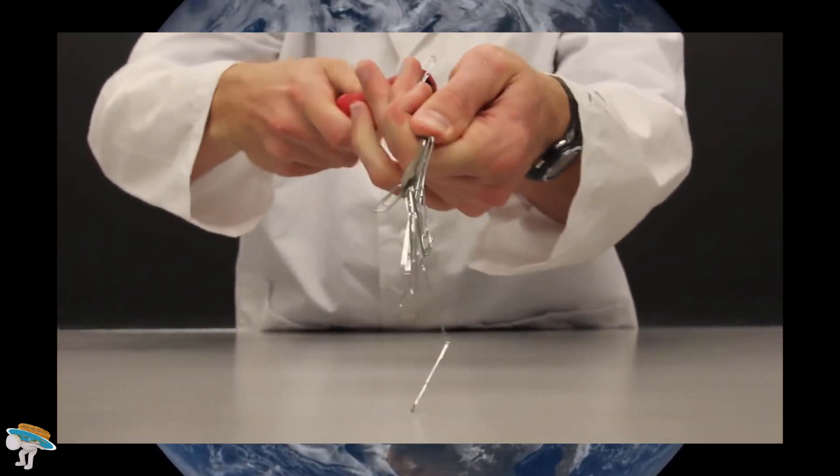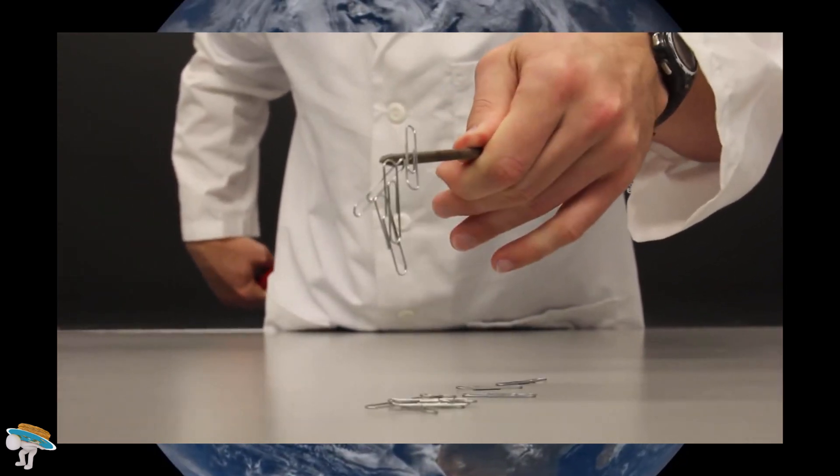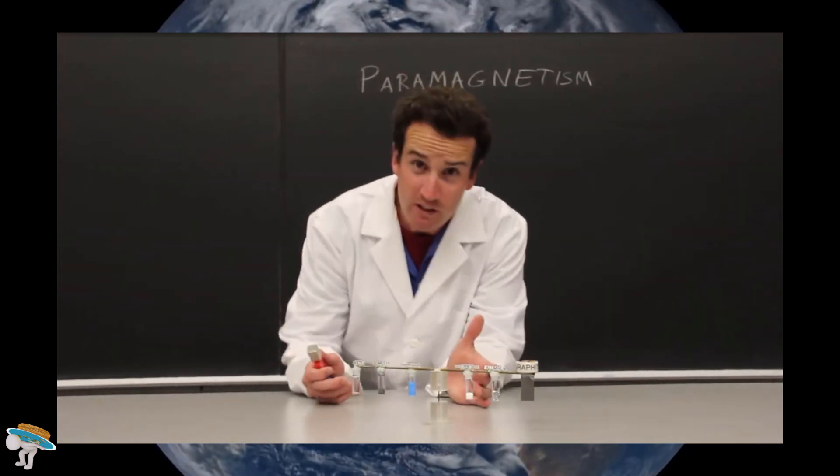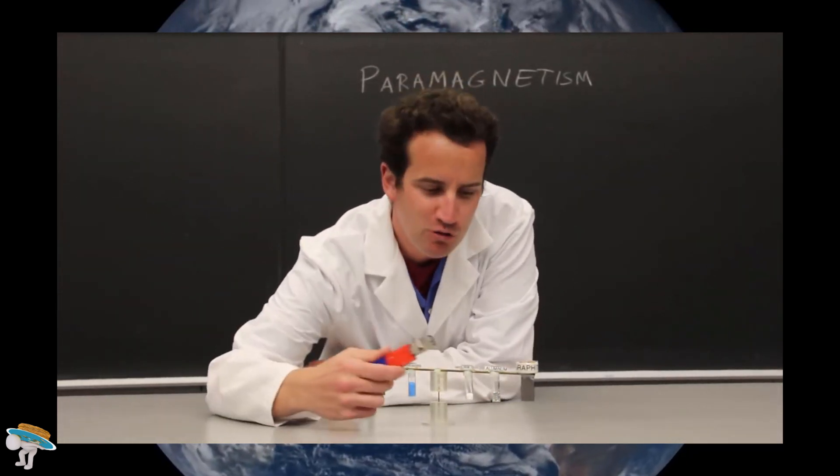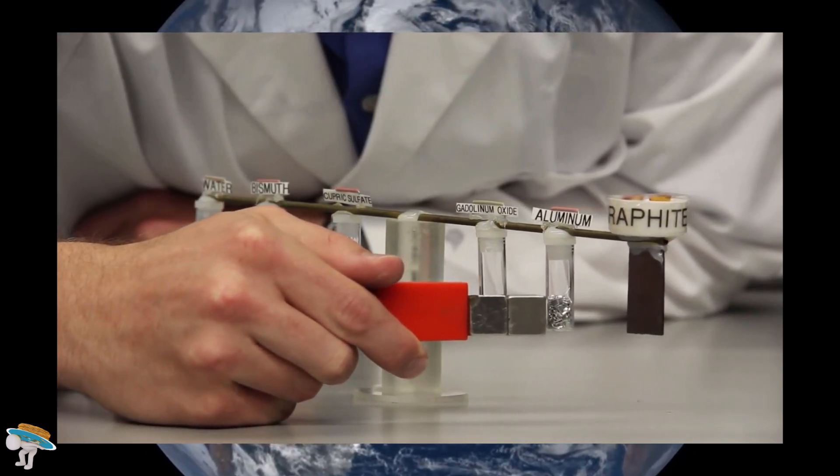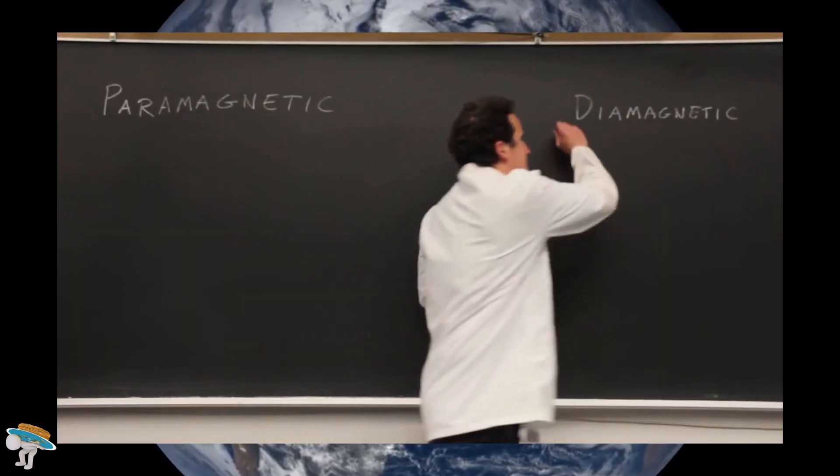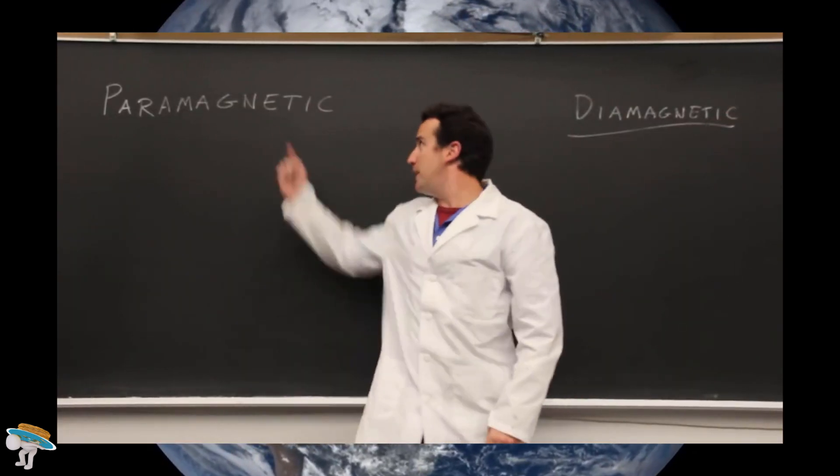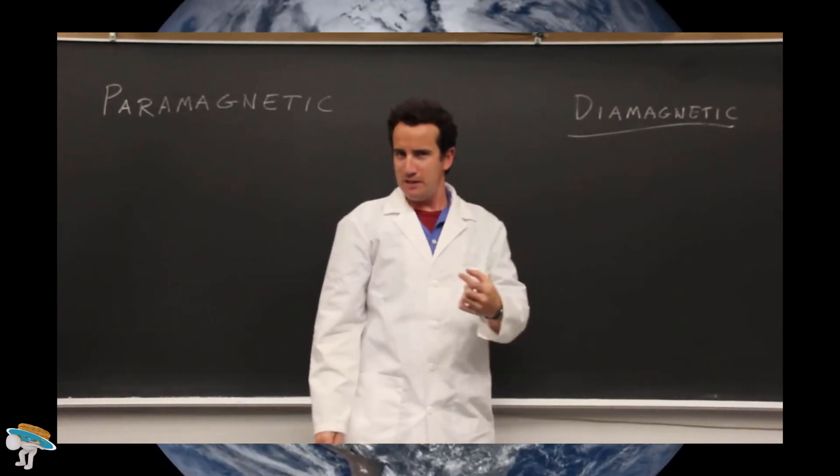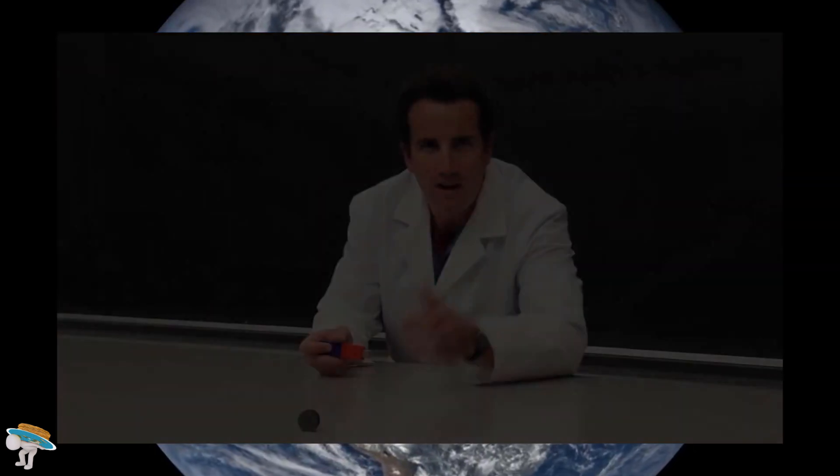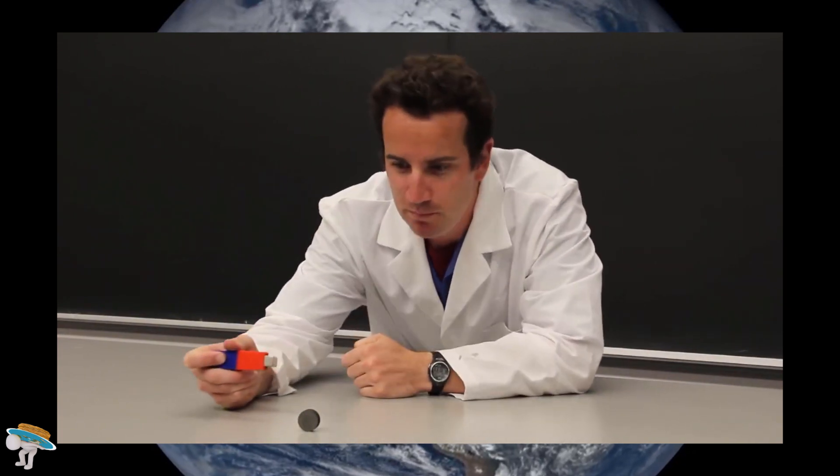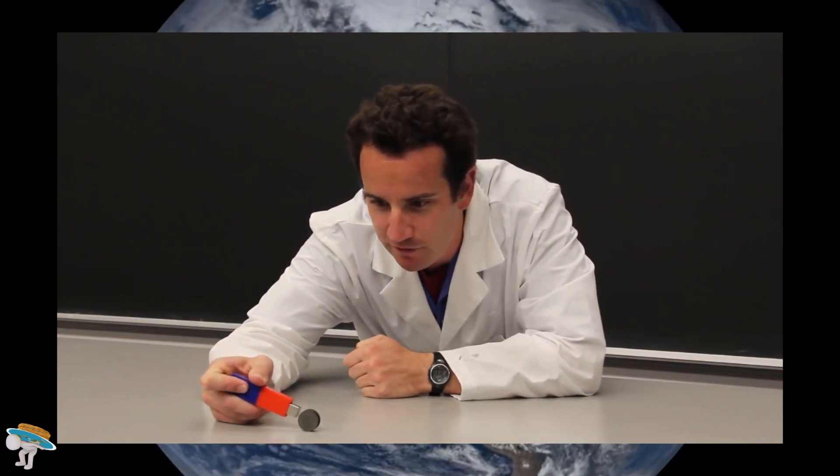An unmagnetized piece of iron or nickel or cobalt becomes a magnet in the presence of a magnetic field. The effect is strong and lasts even after the magnet is removed. Paramagnetism is a similar effect, except that it's much weaker and temporary. Aluminum is a good example of a paramagnet. Diamagnetic materials are exactly the opposite of paramagnetic. They are always repulsed. They would rather die than be in a magnetic field.